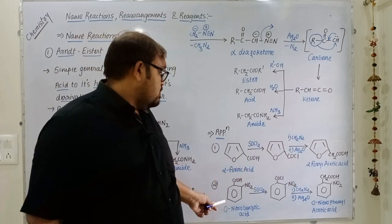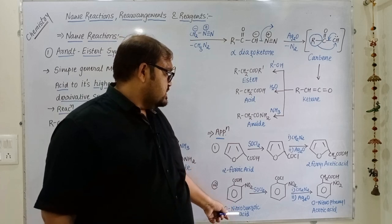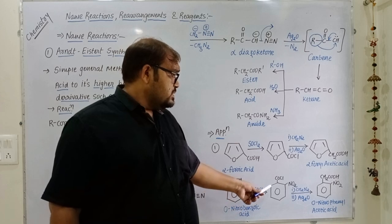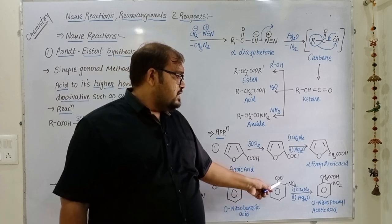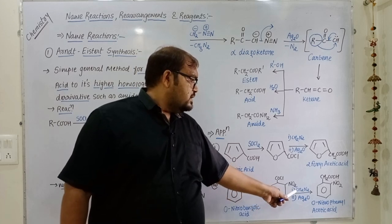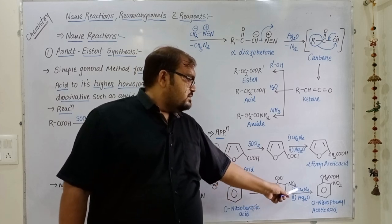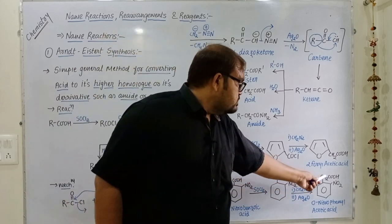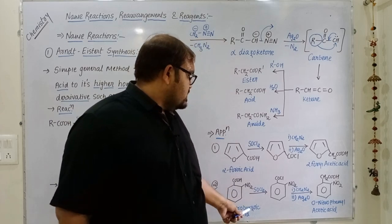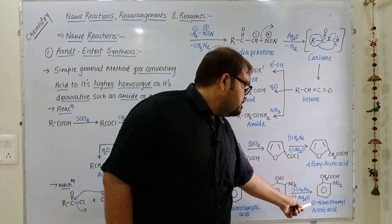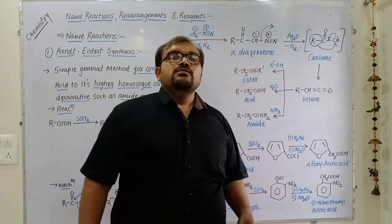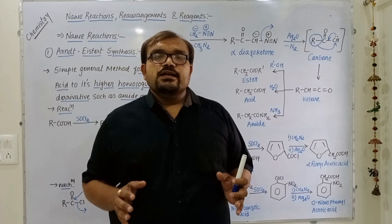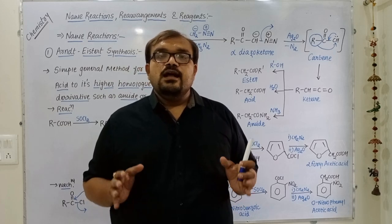The second application: ortho-nitrobenzoic acid when reacted with thionyl chloride is converted into acid chloride. Reaction of this acid chloride with diazomethane and silver oxide gives –CH₂COOH, meaning ortho-nitrobenzoic acid is converted into ortho-nitrophenylacetic acid. By this way we can easily explain the important name reaction Arndt-Eistert synthesis.